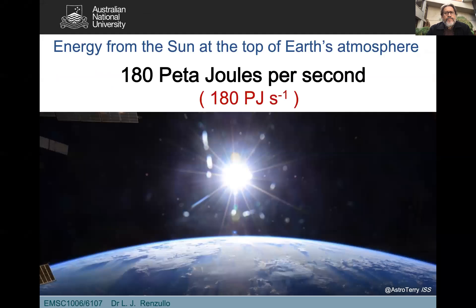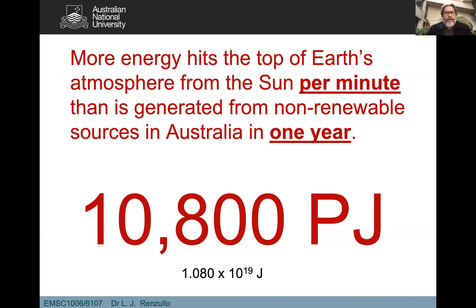The energy output from the Sun by the time it travels the vast distances of space and gets to Earth's atmosphere is about 180 petajoules per second at the top of Earth's atmosphere. Put it another way, that's more energy at the top of Earth's atmosphere from the Sun per minute than Australia was able to generate from non-renewable energy sources in one year. In one minute, that's 10,800 petajoules of energy.